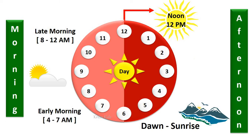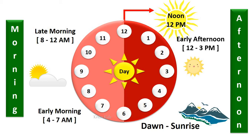From 12 o'clock to 3 o'clock, it is called as early afternoon. And from 4 o'clock to 6 o'clock, it is called as late afternoon.